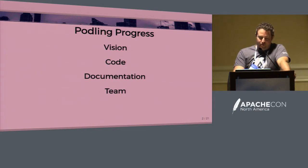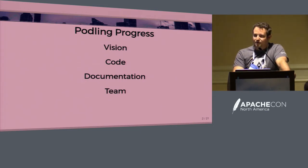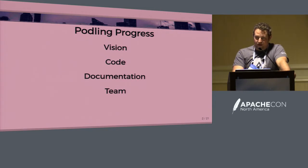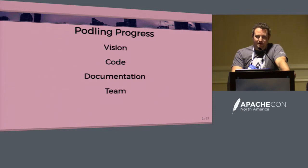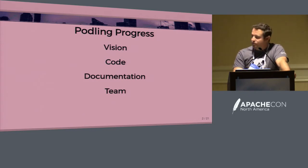I've broken this talk into four parts: areas a project needs to develop to become self-sufficient and relevant — vision, code, community over code (but the code still matters), documentation, and team. For each, I'll talk briefly about why it's important, characterize the different phases of progress I've observed, offer examples and anecdotes from working on Streams, and note some tactics for getting from one phase to the next. I'll also pause to survey the room if anyone wants to add a comment or ask a question.